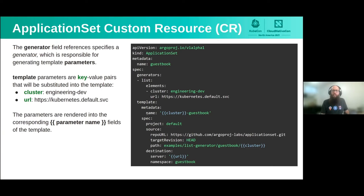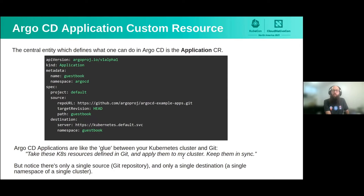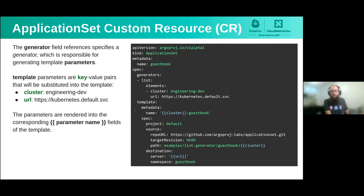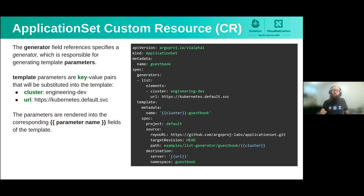Let's start with template. You might recognize this — we've got the source here, which is a Git repository, and the destination, which is a Kubernetes cluster. This template field is just a templated Argo CD application, giving you the exact same set of fields and all the power of Argo CD. But there is something new: these curly-braced parameter values for cluster and URL, which allow you to customize the deployment to a target cluster with template parameters.